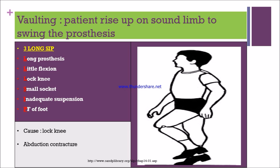Next is vaulting gait. The patient rises up on the sound limb to swing the prosthesis forward. The mnemonic is 'three long sip': long prosthesis, little flexion, lock knee, small socket, inadequate suspension, and plantar flexion of the foot. If the patient has a lock knee or abductor contracture, they will have vaulting gait.